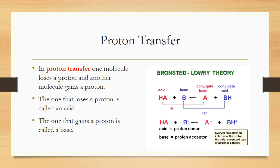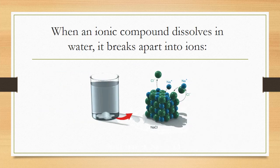The Brønsted-Lowry theory involves proton transfer. In this model, one molecule loses a proton and another gains it. The acid loses a proton and the base gains that proton. The molecule that loses a proton is called an acid, and the one that gains a proton is called a base.